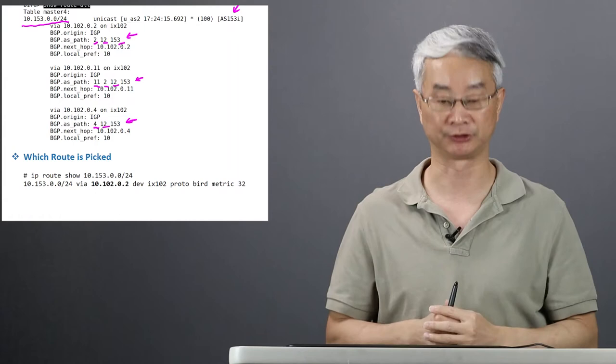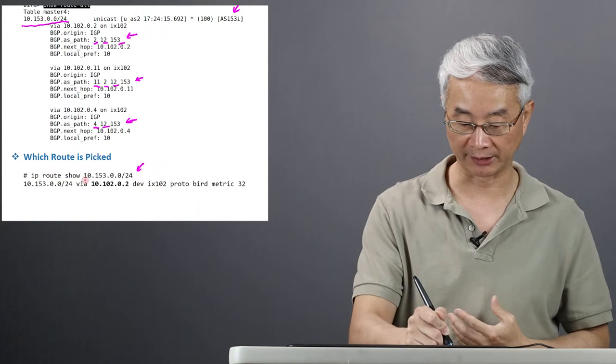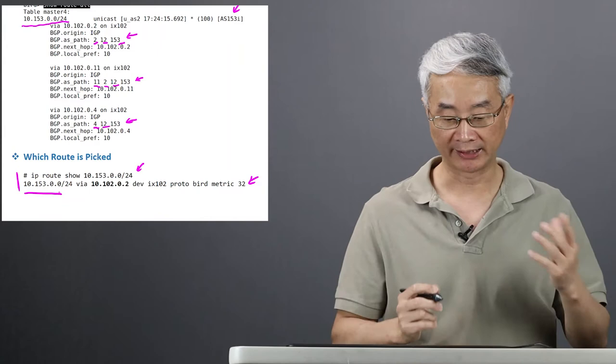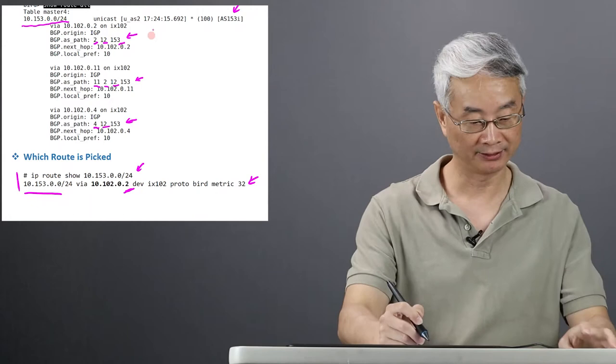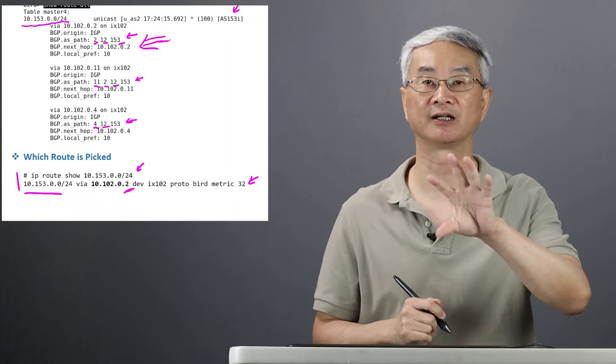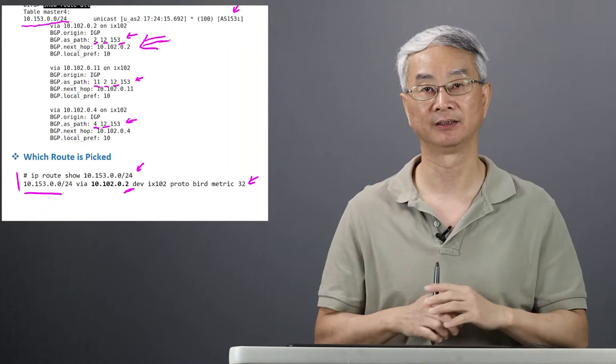If you want to find out which route is selected, you can look at the routing table on this machine. The routing table only shows you the route that gets selected. You can see here 10.153 goes to AS2, so that means this route gets selected. When you configure BGP, you can configure many things that will affect which route gets selected. Right now we're doing everything by default from the emulator.